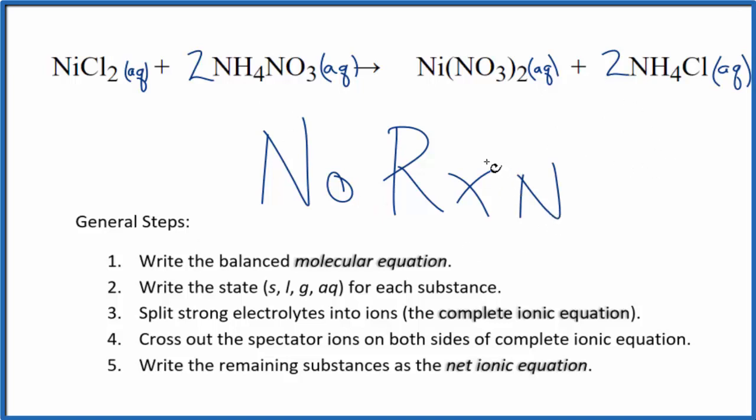This is Dr. B with the net ionic equation, or in this case, no reaction, for NiCl2 plus NH4NO3. Thanks for watching.